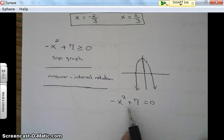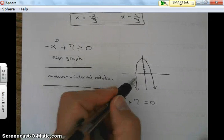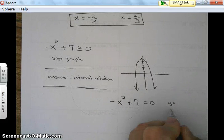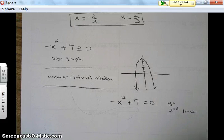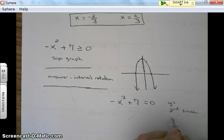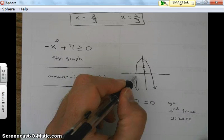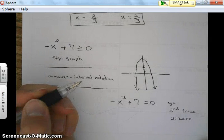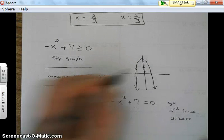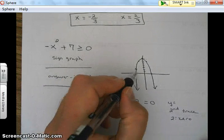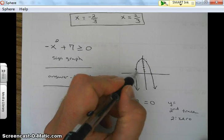We could also put it in our calculator and put it in y equals, then press second, trace. And I believe it's number two for zero. And then we would do our left bound. So we'd put the cursor here, enter, put the cursor here, enter, and then we'd enter one more time. And then it would tell us what the x value is right here.